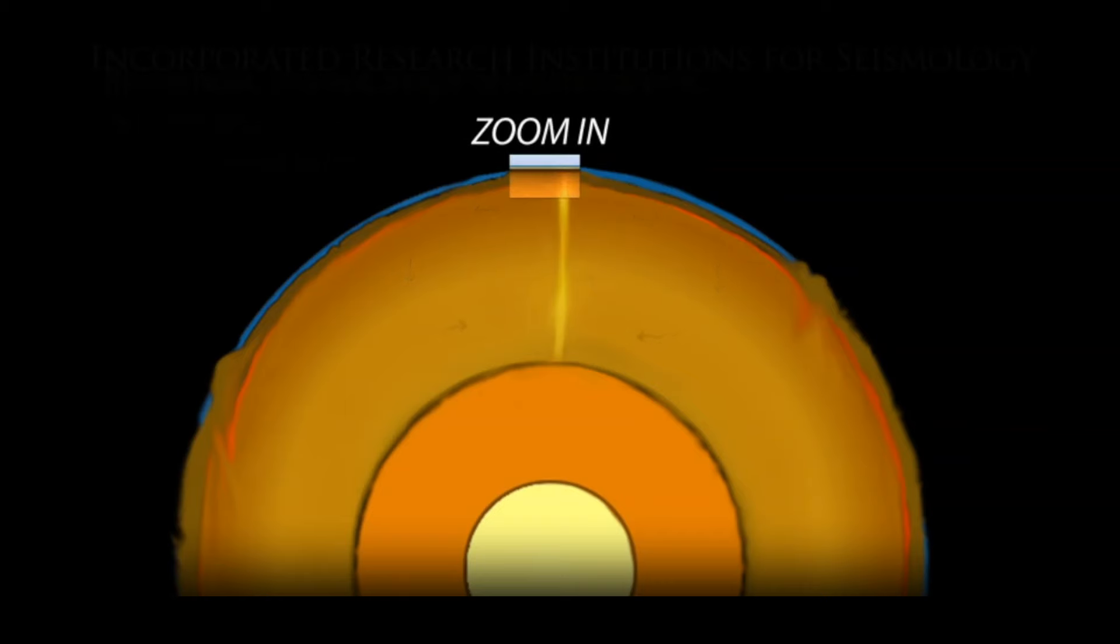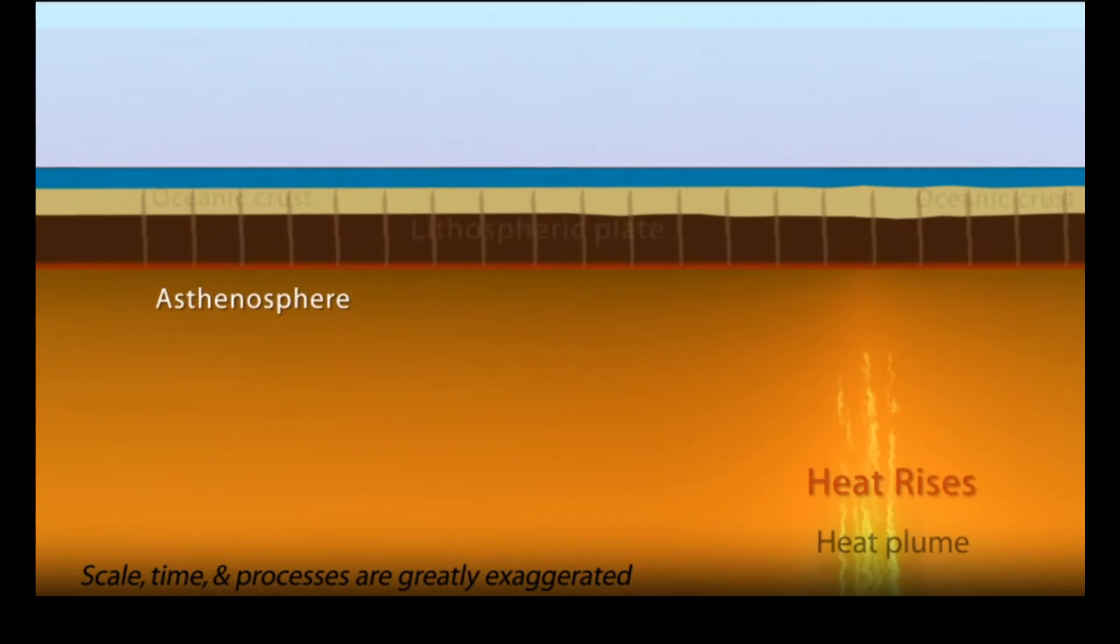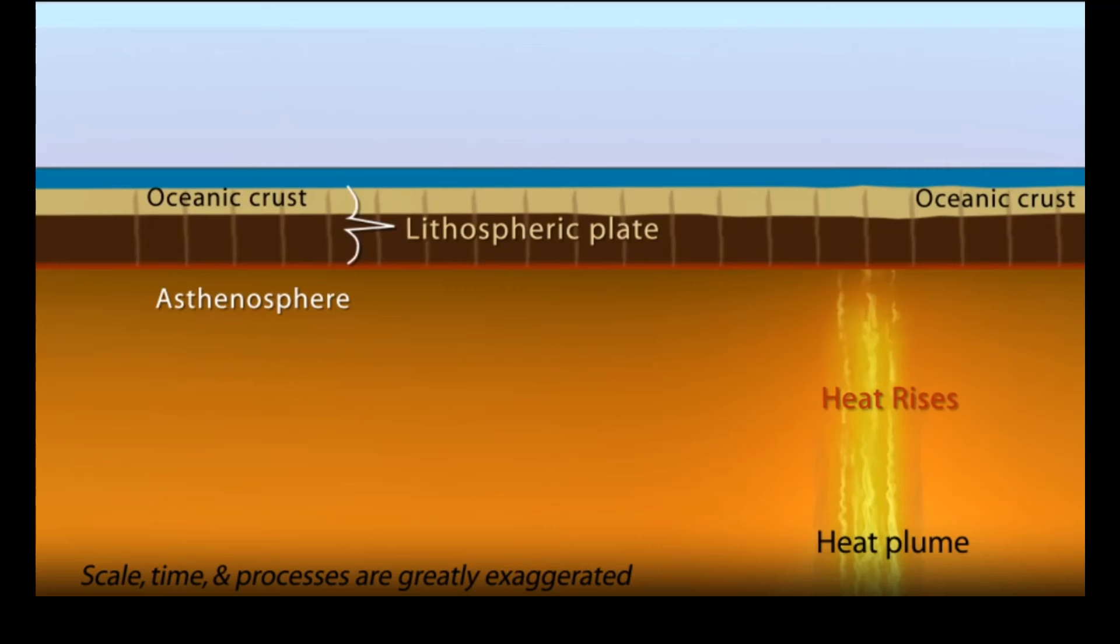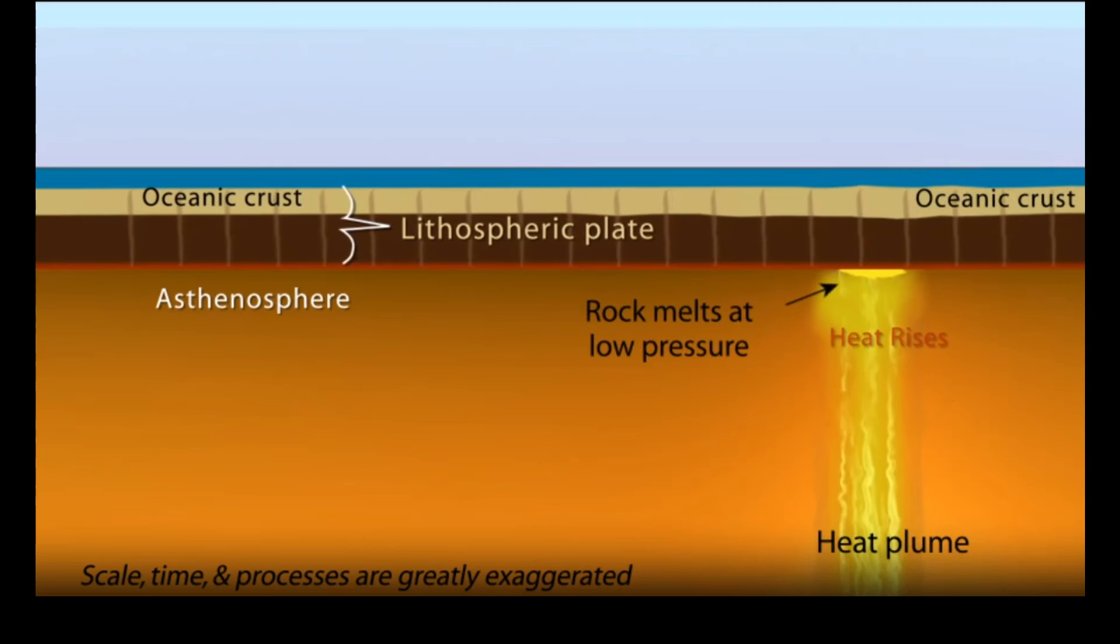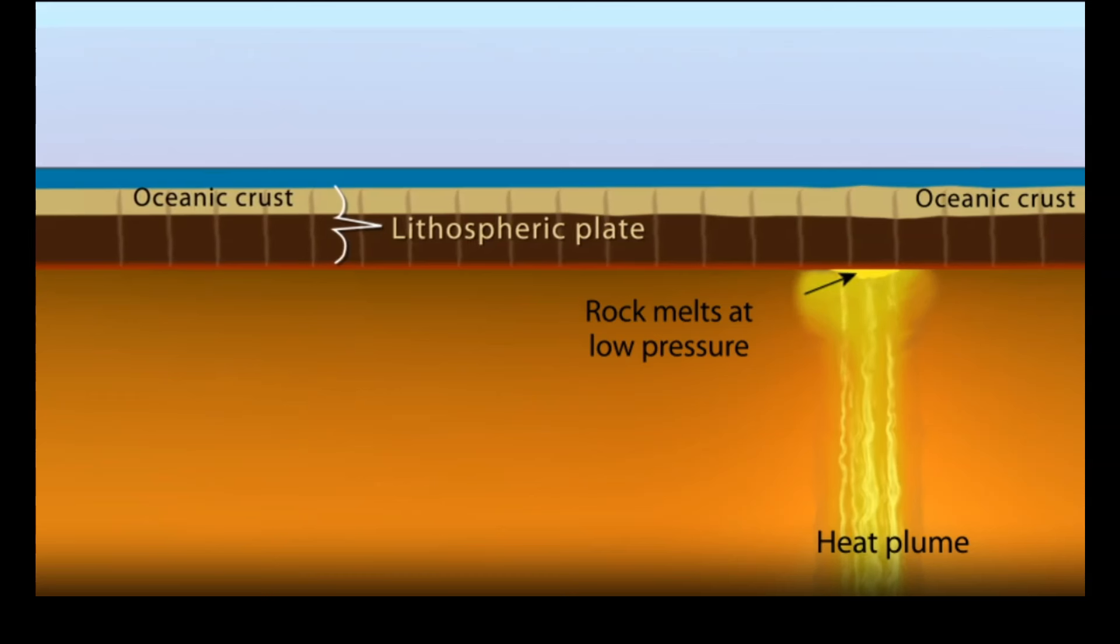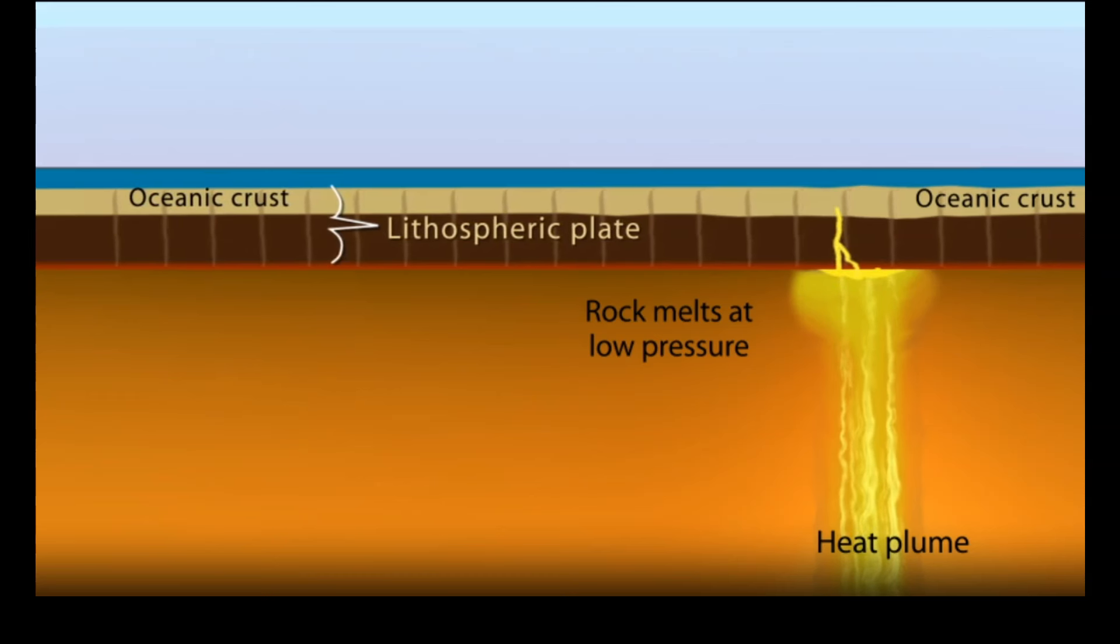All right, so let's zoom in and see what's happening here. Keep in mind, we've got different layers of the earth. At the top, we've got the lithosphere, which includes the crust and the top layer of the mantle. And this thermal plume is going up, heating the rock, the lithosphere, the tectonic plate.